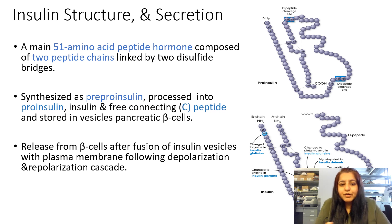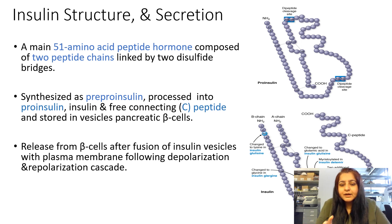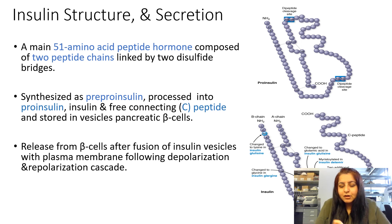Insulin is a 51 amino acid polypeptide hormone composed of two polypeptide chains linked by a disulfide bridge. This hormone is synthesized via ribosomes in the beta cell cytoplasm, then translocated to the endoplasmic reticulum where it is processed by endopeptidase into pre-insulin, then pro-insulin, then the C-peptide. After processing, insulin is stored in the beta cells of the islets of Langerhans.